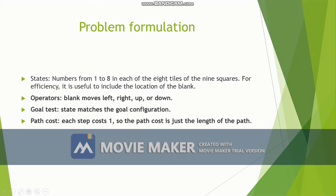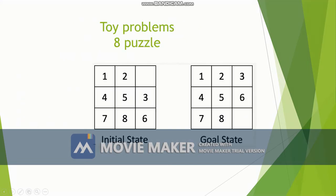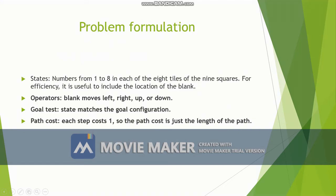Let us formulate the 8-puzzle problem. The state consists of numbers 1 to 8 arranged in any of the 9 squares, and the location of the blank tile is also important. The operators are the actions available: the blank tile can move left, right, up, or down.